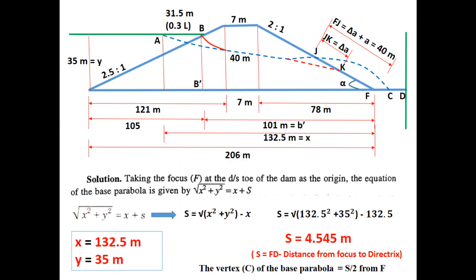First we need to find the value of s, taking the focus at the downstream toe — the focus point F is the downstream toe of the dam as the origin. From the equation of the parabola: √(x² + y²) = x + s, so s = √(x² + y²) − x. Here x = 132.5 m (distance from focus F to point A) and y = 35 m (water height). Substituting these values gives s = 4.545 m.